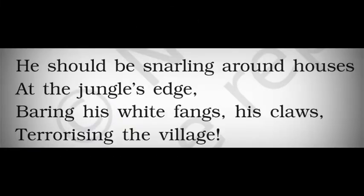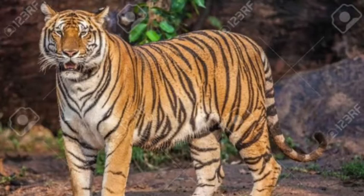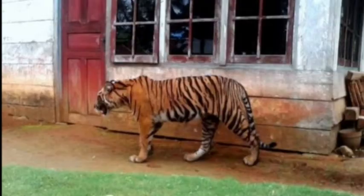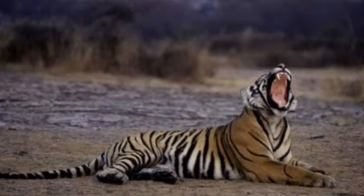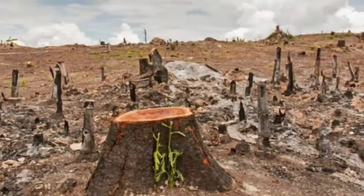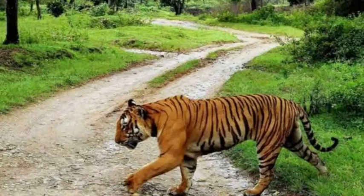Third stanza: He should be snarling around houses at the jungle's edge, baring his white fangs, his claws, terrorizing the village. In this stanza, the poet is describing the life of a tiger in its natural habitat. The poet says that if the tiger would have been free, he would have been growling around the houses and terrorizing the people in the villages around the forest area, creating fear by showing his sharp teeth and claws. Indirectly, the poet is also telling us that if we destroy the natural habitat of wild animals, they will be forced to enter our residential areas to find food.